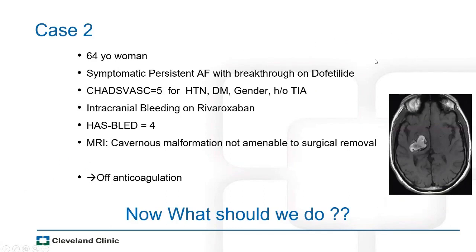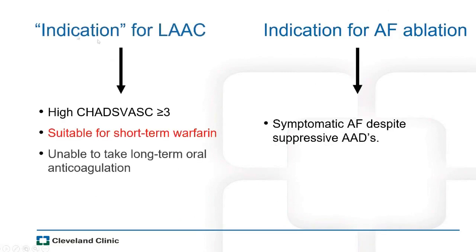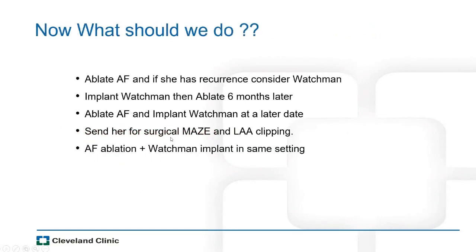Consider a second case: a 64-year-old woman with symptomatic persistent AFib despite medical therapy, a CHADS-VASc score of 5 (hypertension, diabetes, history of TIA), a history of intracranial bleed on rivaroxaban, and a HAS-BLED score of 4 due to cavernous malformation not amenable to surgical removal. She has been off anticoagulation. She clearly has indication for both AFib ablation and left atrial appendage closure, posing a classic dilemma.